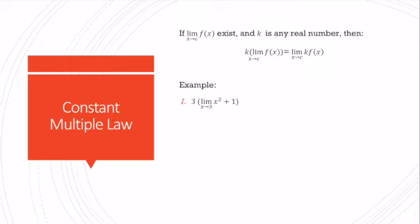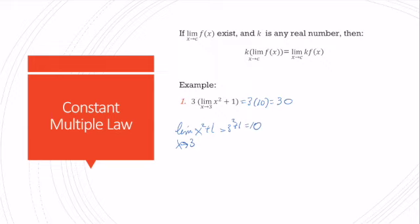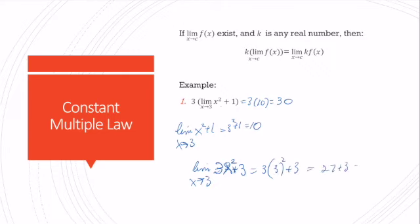The constant multiple law says that if k is any real number, then k times the limit of a function is the same as the limit of k times that function. For example, the limit as x goes to 3 of x² plus 1 equals 9 plus 1 = 10. Multiplying by 3 gives 30. If instead we distribute and compute the limit of 3x² plus 3 directly — substituting 3: 3(9) plus 3 = 27 plus 3 = 30. These are equivalent.